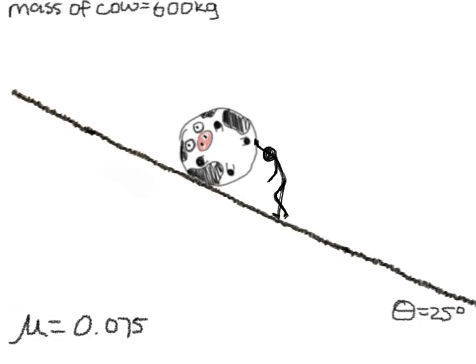A farmer rolls his spherical cow up a hill when he slips and falls. Find the acceleration of the cow.